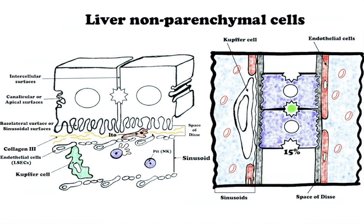Pit cells are liver-associated natural killer (NK) cells, which are large granular lymphocytes representing a morphologically and functionally modified form of peripheral blood NK cells. They are localized inside the lumen of the sinusoid, closely adhering to endothelial cells and Kupffer cells, often extending well-developed pseudopodia suggestive of migration along the sinusoidal wall. NK cells are defined by their ability to kill certain tumor cells and virus-infected cells without prior sensitization.